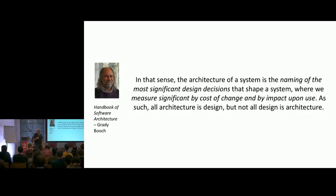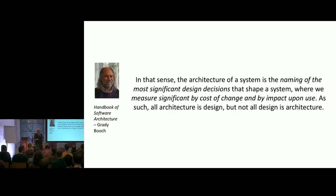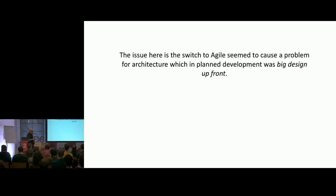A classic example always raised is the problem of undo: if you don't build in undo early enough, it's difficult to write it in later. So you have to make some upfront decisions — for instance, deciding it's important to support undo so you build it in early, because in a year's time it will be really hard to put that into the software.